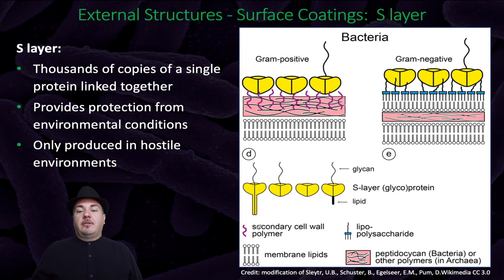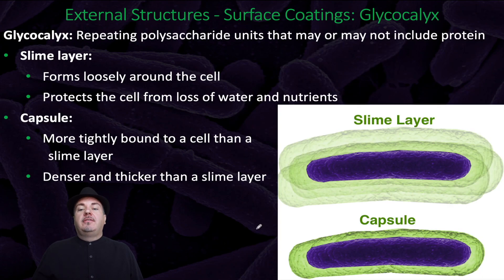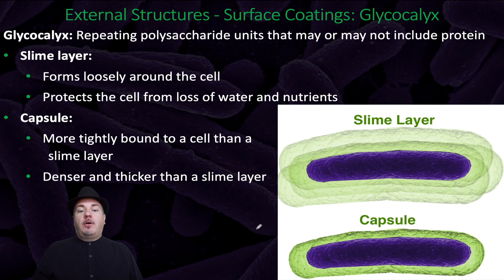The other type of external structures are surface coatings. One type is the S layer, where thousands of copies of a single protein are linked together and it provides protection from environmental conditions — it's produced in hostile environments for the bacteria. The other type of surface coating is the glycocalyx, which is repeating polysaccharide units that may or may not include proteins. There are two different types: slime layers and capsules. Slime layers form loosely around the cell and protect it from loss of water and nutrients.